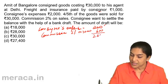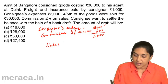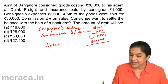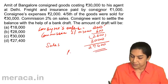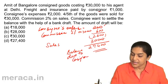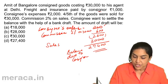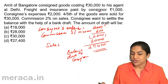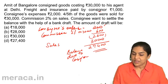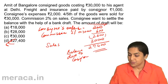So totally Rs. 2,600 has to be given to the consignee, and the consignee has sold goods for Rs. 30,000. So net Rs. 30,000 minus Rs. 2,600 gives Rs. 27,400, which should be the balance due to the consigner. The consignee retains Rs. 2,000 for expenses, Rs. 600 for commission, totalling Rs. 2,600, and therefore sends the balance of Rs. 27,400. The amount of the draft should be Rs. 27,400. Correct answer will be option D.